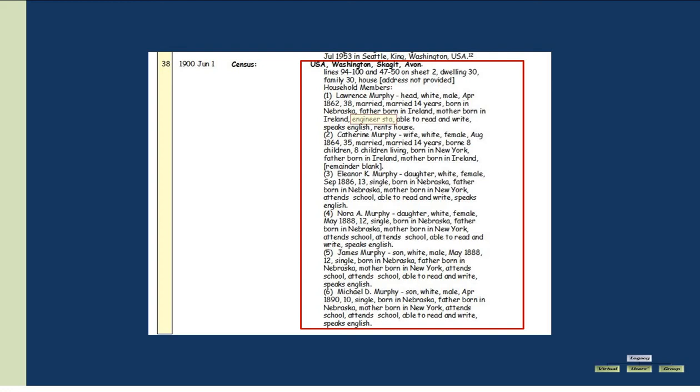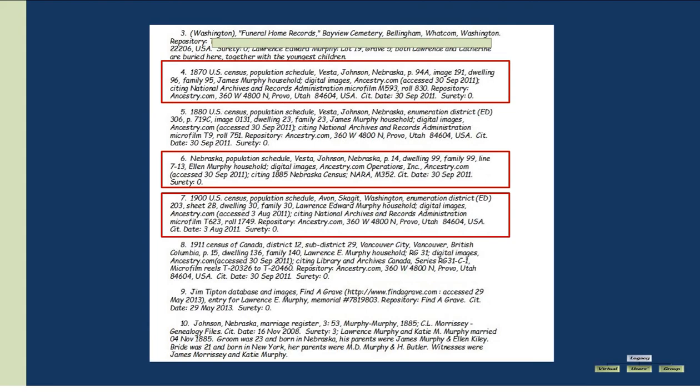This is all great information to work your way through family members. We can also see occupation and school information. If you know the place — and you will from the census — you can search for schools and companies in the area that might have more information. Here are the examples of the source citation page. All of the citations are listed as endnotes, because that's what I asked Legacy to do in Options. My census citations follow very closely with Evidence Explained, although I'm a lumper — but that's another Tuesday's tip.